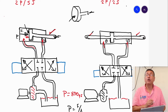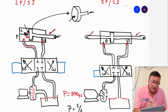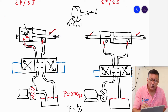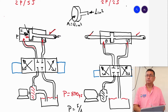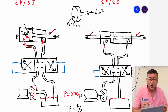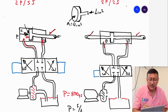We are going to check the area of the piston. I am going to suppose that the area of the piston is four square inches, and the area of the rod is one square inch. So the area on the rod side of the piston is four minus one, which equals three square inches.